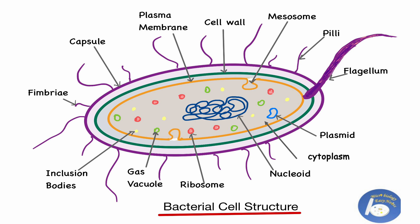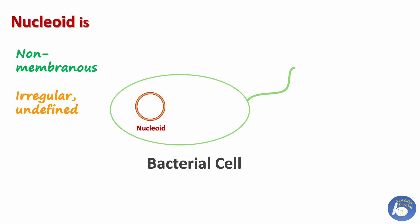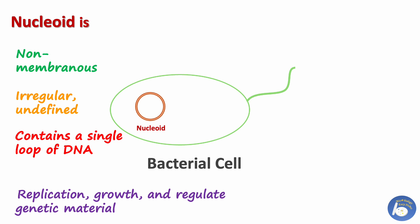As we know, all bacterial cells possess a nucleoid, which is a non-membranous, undefined, irregular-shaped area that contains a single loop of DNA. It controls all essential activities like replication, growth, and regulation of genetic material.